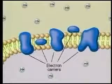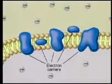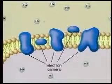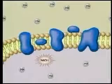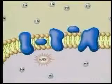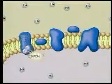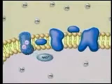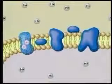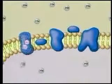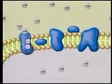The electron carriers are arrayed side by side like the links in a chain. Three of these proteins are ion pumps. NADH transfers two high-energy electrons to the first electron carrier, an ion pump. NADH then changes to NAD.